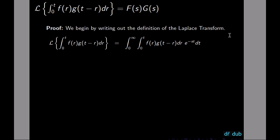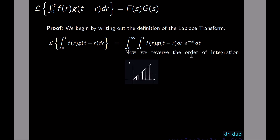Now this is a double integral, and we're going to reverse the order of integration. Right now r goes from 0 to t — so along the line r equals t — and t goes all the way out to infinity. All we want to do is reverse the order of integration so that t goes from r to infinity.